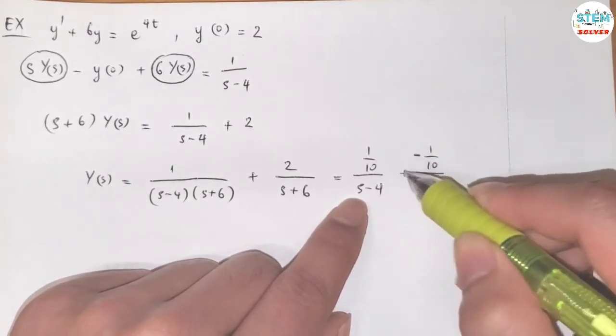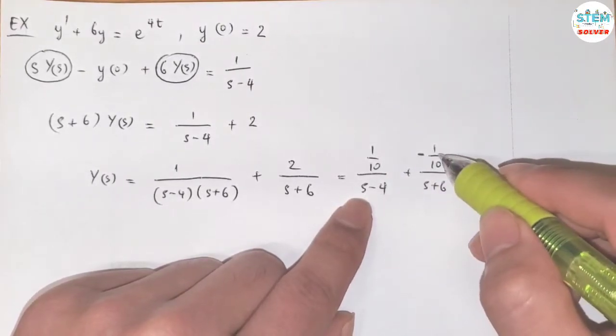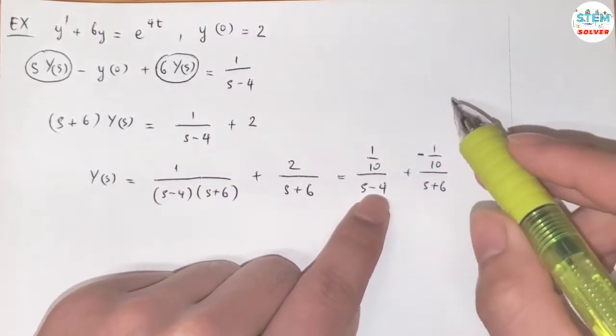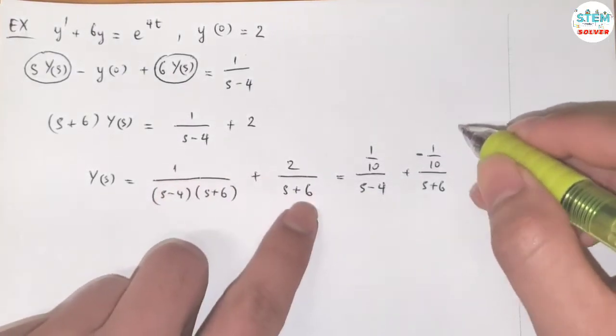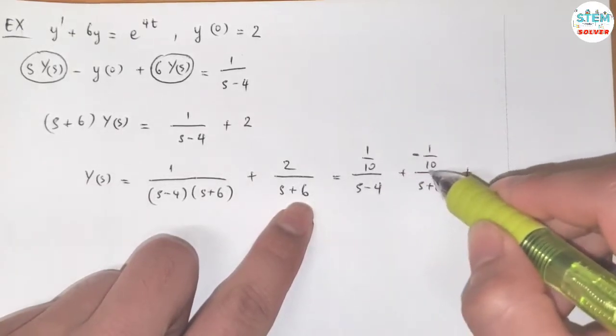So you have negative 1 tenth S plus 1 tenth S, that is 0. Negative 1 tenth times negative 4, which is 4 over 10, plus 6 over 10, which is 10 over 10, and that is 1. So very quickly, I can find its partial fractions. Now, just rewrite this.